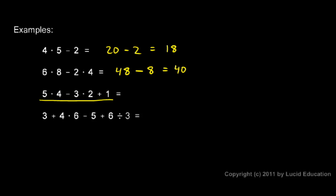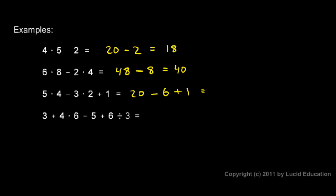This next one: I'll rewrite the problem, going left to right and doing all the multiplication and division first. 5 times 4 is 20, then I have a minus sign — I'll leave that. Then 3 times 2 is 6, and then there's a plus 1. Now I go through and do my addition and subtraction left to right: 20 minus 6 is 14, and plus 1 is 15.